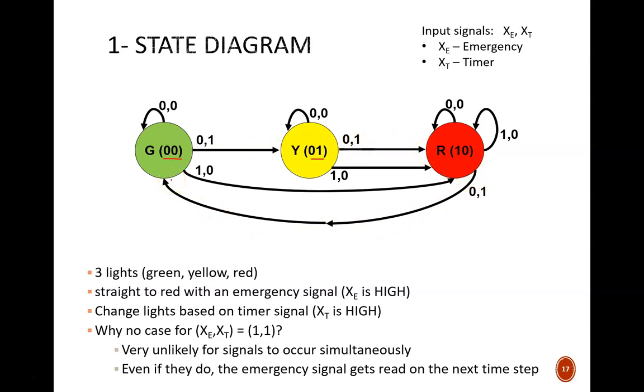There is one input combination I haven't drawn: 1-1. This would be the case when both the timer and the emergency inputs occur simultaneously. We certainly could explicitly design for that case, and would probably do so by sending the state straight to red. However, I am choosing to consider those as don't care conditions, for two reasons.